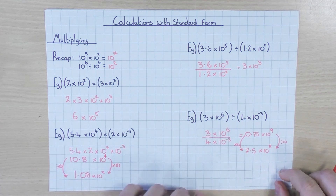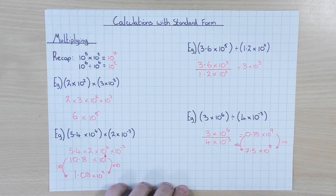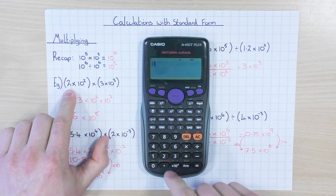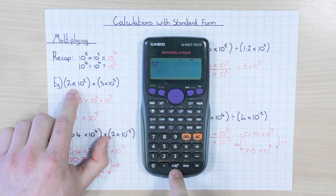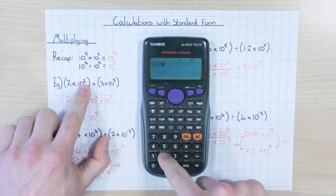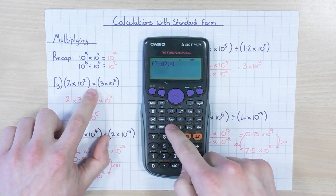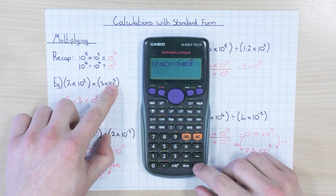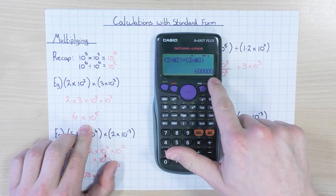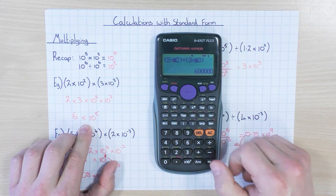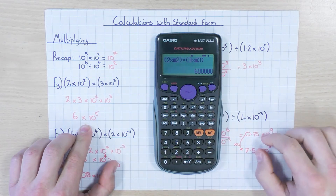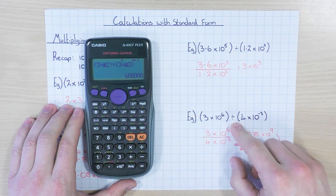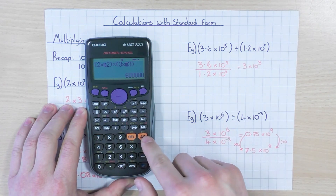I'll quickly show you how to type this into your calculator. For example, type bracket 2, then use the ×10ˣ button, enter the power of 2, close bracket, times, open bracket 3, ×10ˣ button, power of 3, close bracket, press equals. The calculator gives you the answer but not necessarily in standard form, so you then convert it. For division, just use divide instead — but use that same ×10ˣ button throughout.